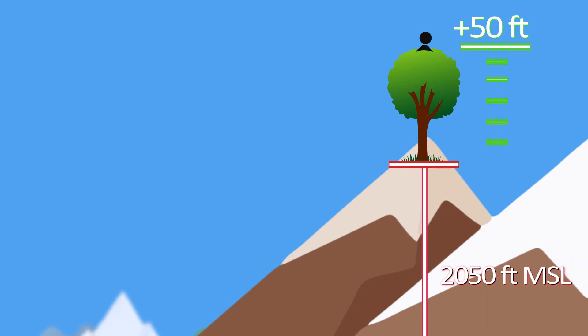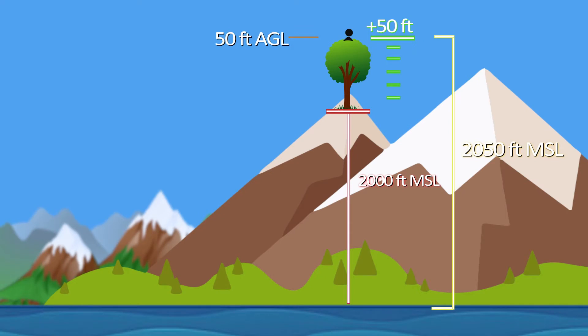But for AGL, you're gonna be at just 50 feet since the ground is literally 50 feet below you. So you'd be 50 feet AGL, 2,050 feet MSL. Let's think about that distinction: one is how high you are above the physical ground below you, and one is in relation to sea level.